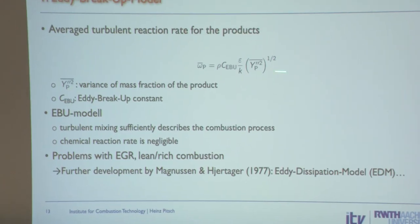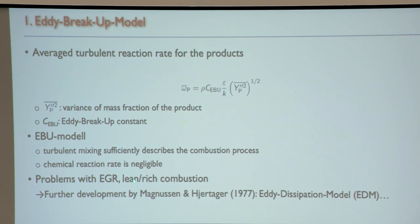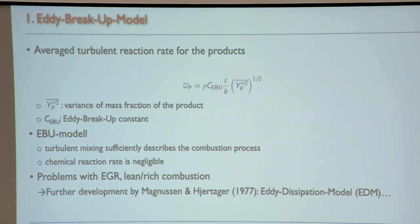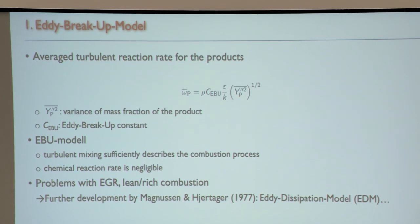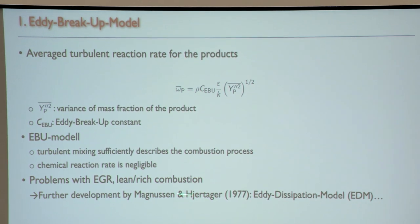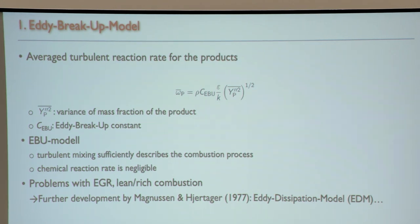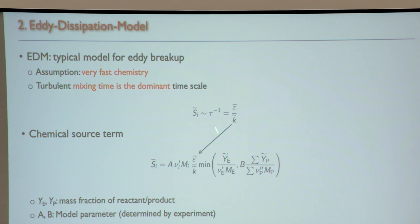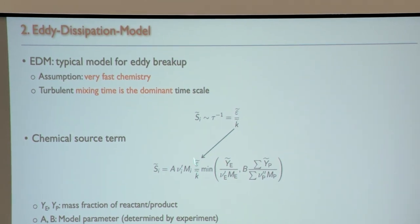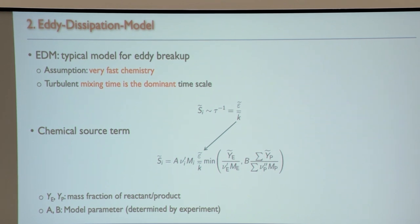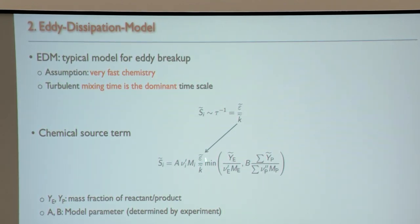The problem with the eddy breakup model is that it is totally independent of the chemistry — it doesn't know if you have EGR, or if you have a lean or rich mixture. You cannot use it for diesel engines. People interested in diesel engines, such as Magnussen, came up with a very similar model. In that model the chemical source term is also proportional to the inverse turbulent timescale ε/k, so faster turbulence means faster reaction.